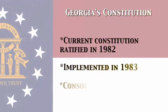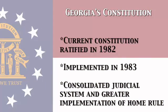Our current constitution was ratified in 1982 and implemented in 1983. The biggest changes with our current constitution are a wider implementation of home rule, as well as a consolidation of Georgia's previously very massive court system — duplicate classifications of courts were streamlined.